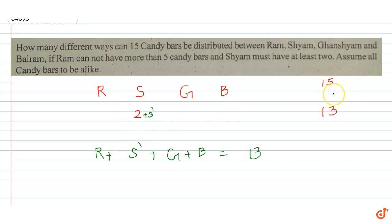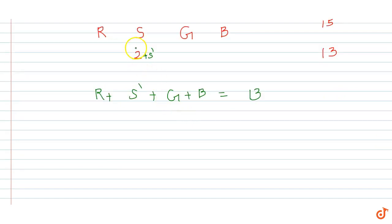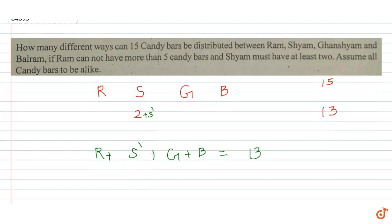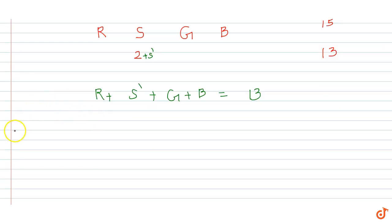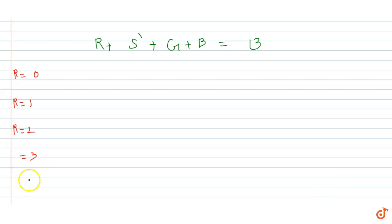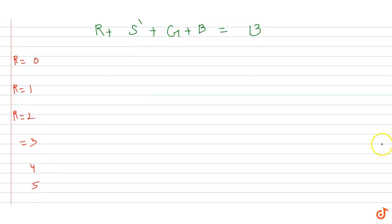We have already given that all the chocolates are the same, so the case has repetition. When Ram equals zero, we start with this case.